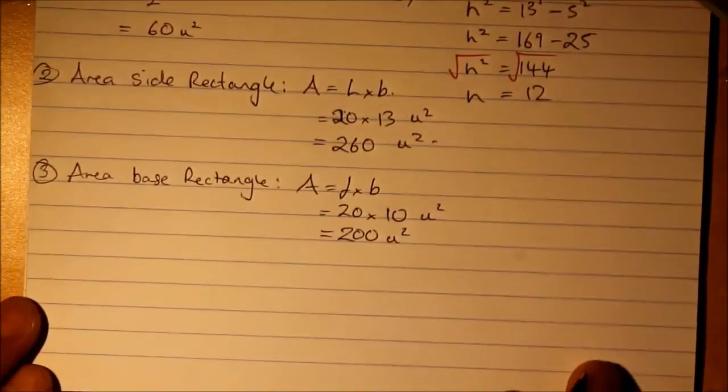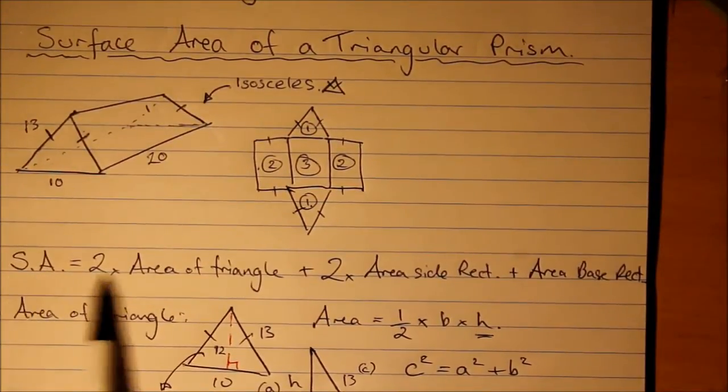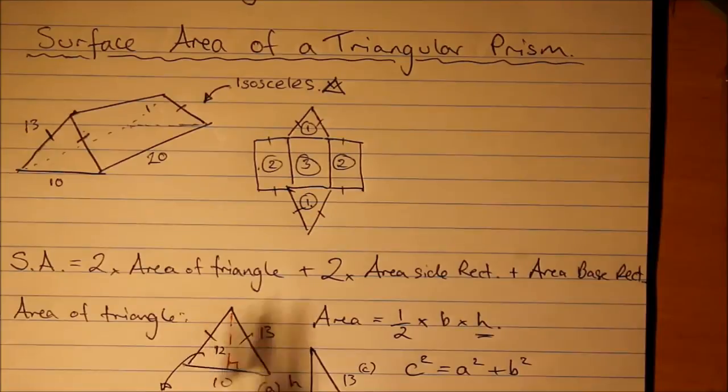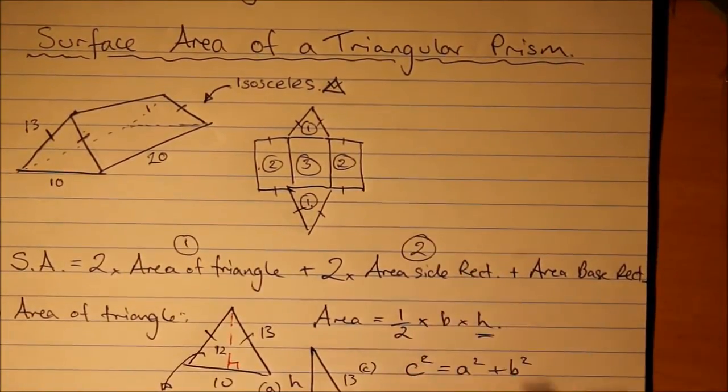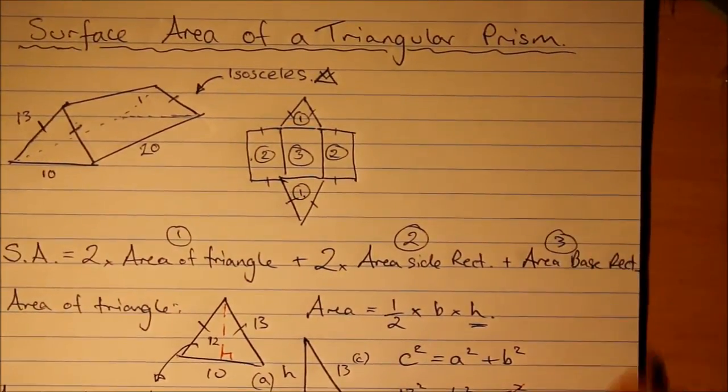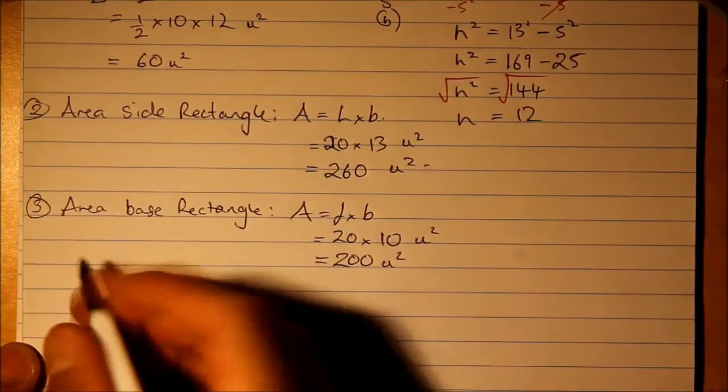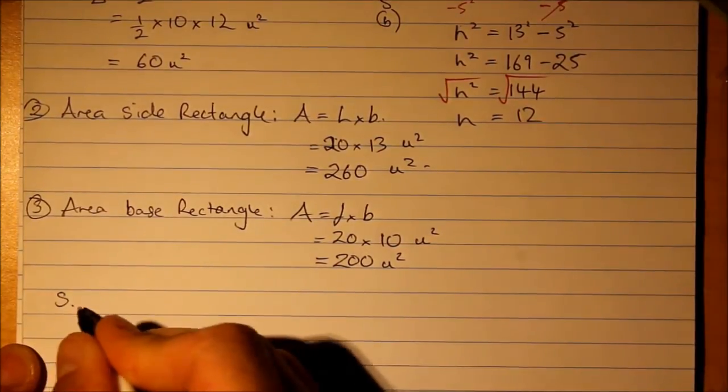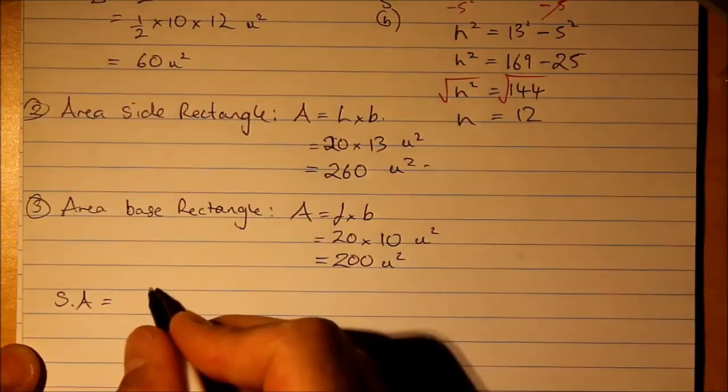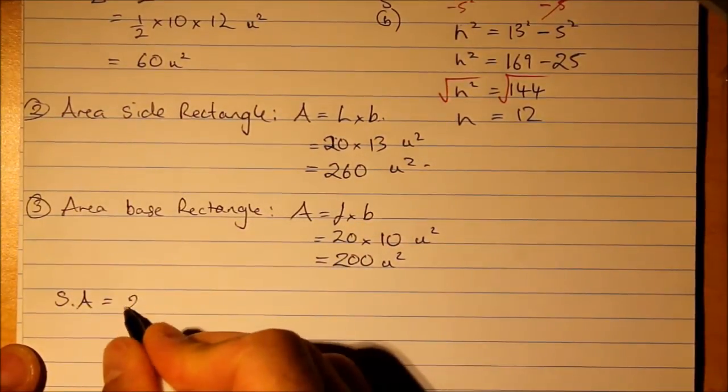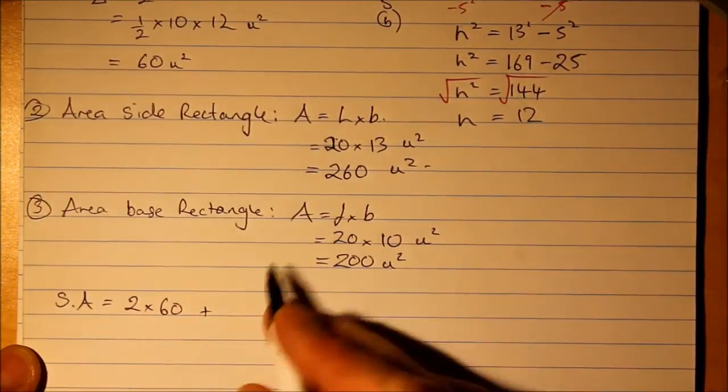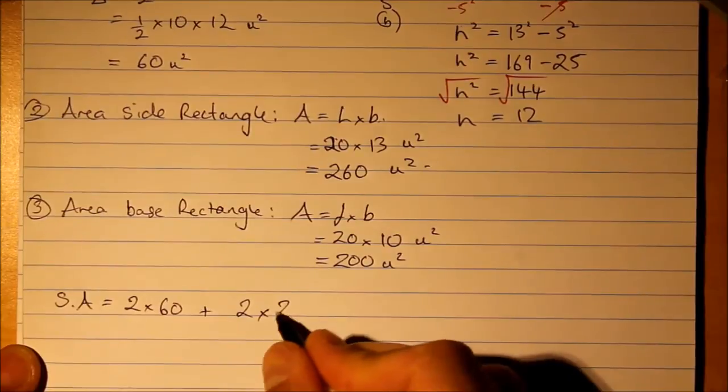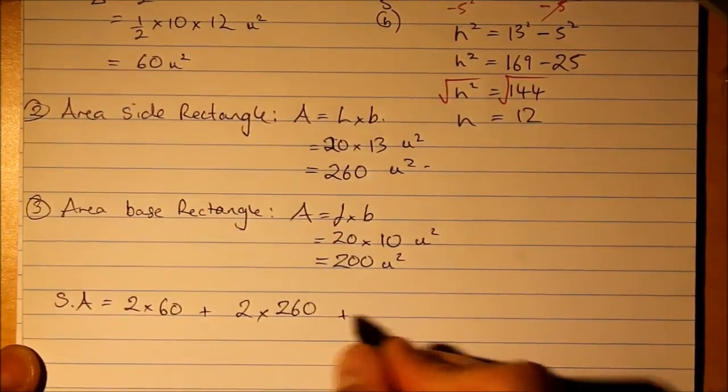Now, all that's left to do is to put it all together. Now, remember we had this formula in words. We're just gonna plug each of these. This was number one, and this was parts two, and this was three. So let's put all that together. Surface area is... Two lots of 60. Plus... Two lots of 260. Plus 200.